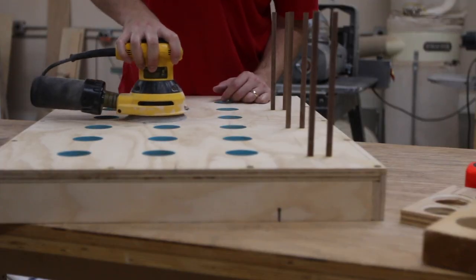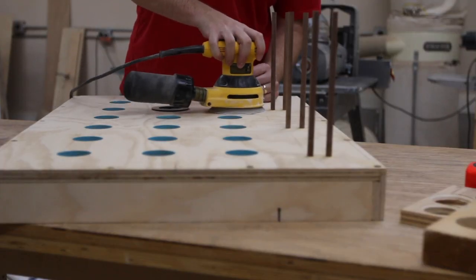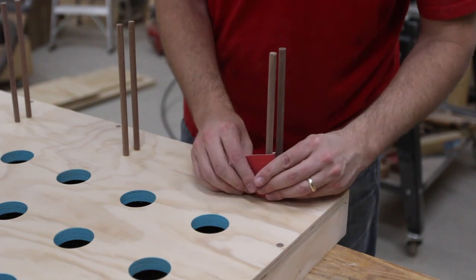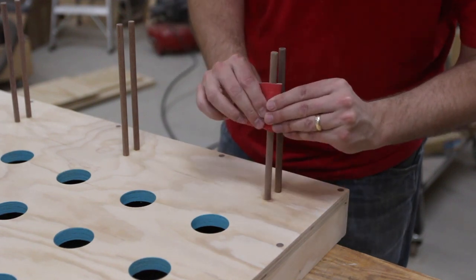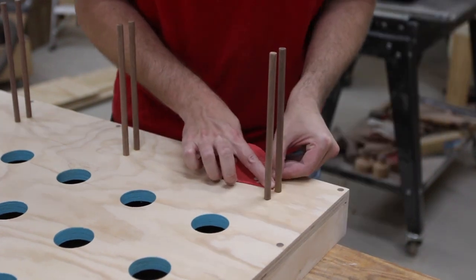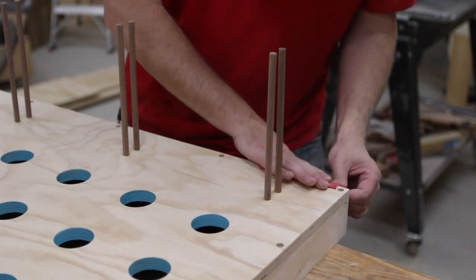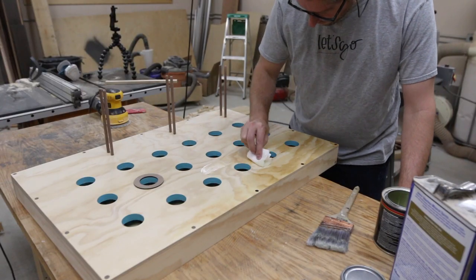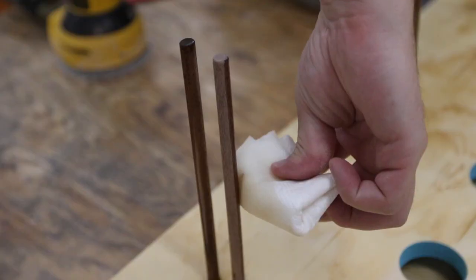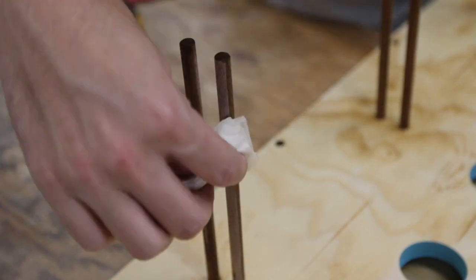I sanded the piece all the way to 220 grit and then applied some brushing lacquer. I wiped on the first coat, then sanded in between with 320 grit, and then I brushed on another couple of coats.